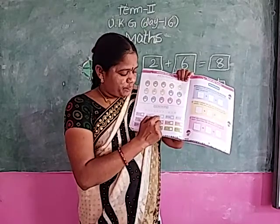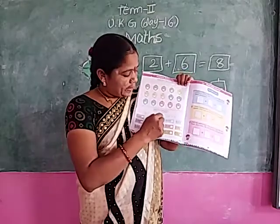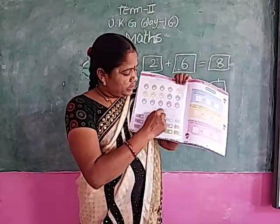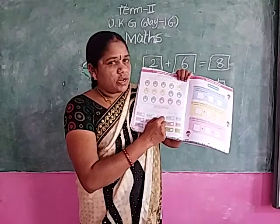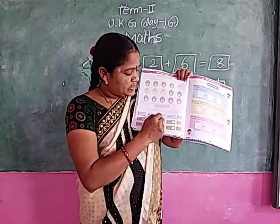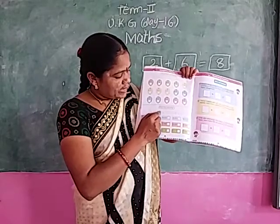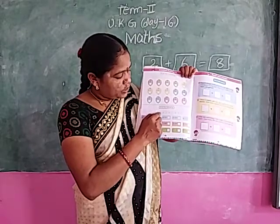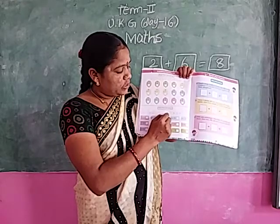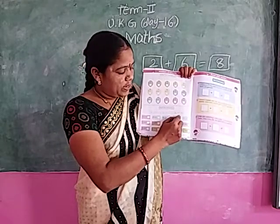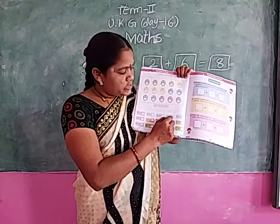4 plus 5 — circle the 5 on the number line, move forward 4 times: 1, 2, 3, 4. Where are you? 9. Write the answer: 9. 4 plus 5 equals 9. Next: 3 plus 3 — circle the 3 on the number line, move forward 3 times: 1, 2, 3. Where are you? 6. 3 plus 3 equals 6.